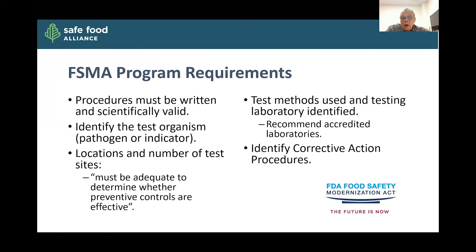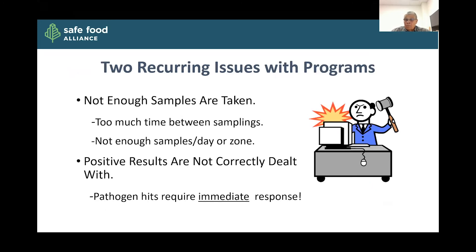A little about FSMA program requirements: procedures must be written and scientifically valid. You have to identify the test organism — either pathogen or indicator — the location and number of test sites, and it must be adequate to determine whether preventative controls are effective. The test method used and the testing lab should be identified — they recommend using an accredited laboratory. Our lab, for example, does ISO 17025, which is the benchmark standard for accreditation in food testing labs. You want to identify your corrective action procedures if you find an issue. Two recurring issues we see: not enough samples being taken — either too much time between samplings or not enough samples per day or per zone — either of which can potentially put your product at risk.